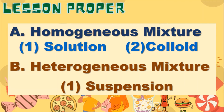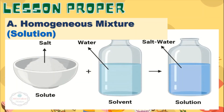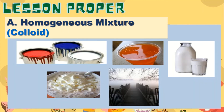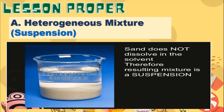This is an example of a homogeneous solution. This one is a homogeneous colloid, like paint or mayonnaise. This one is a homogeneous suspension. And this one is a heterogeneous suspension — sand does not dissolve in the solvent, so the resulting mixture is a suspension. In this picture, the combination of sand and water is a suspension.